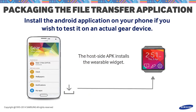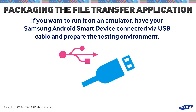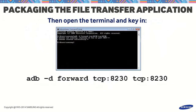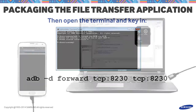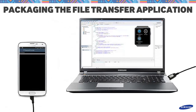Install the Android application on your phone if you wish to test it on an actual gear device. If you want to run it on an emulator, have your Samsung Android device connected via USB cable and prepare the testing environment. Then open the terminal and key in adb -d forward tcp:8230 tcp:8230. Remember to run ft-sample provider first before launching the consumer end application.